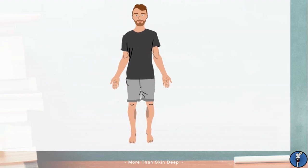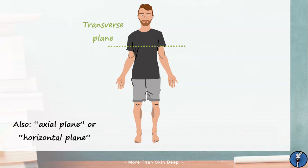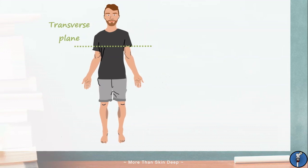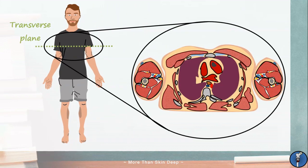The second of the common planes is the transverse plane, also known as an axial or horizontal plane. A transverse plane divides the body into superior and inferior parts, and is the typical plane used when imaging the body with a CT or MRI scanner. Looking at the chest with a transverse plane gives us this view, where we can see the lungs in purple, several muscles and bones, and some of the chambers of the heart right in the centre.